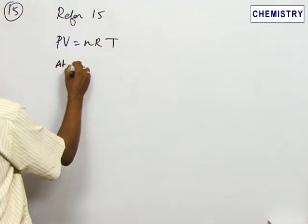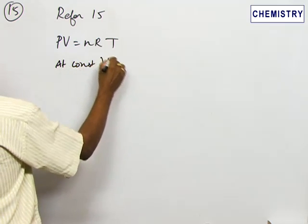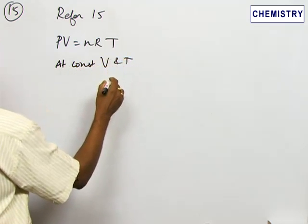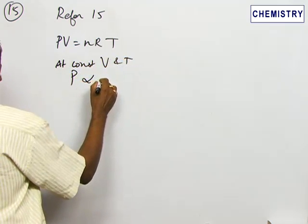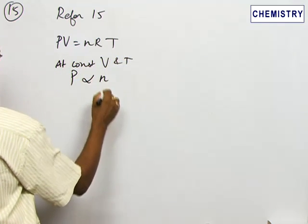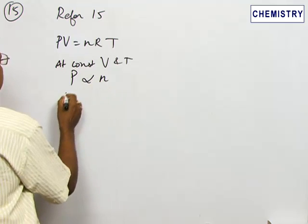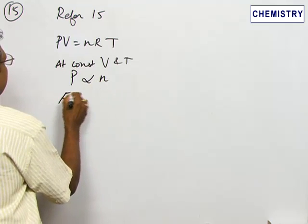At constant volume and temperature, we can write that pressure is now proportional to the number of moles. From here we can calculate the fraction escaping.